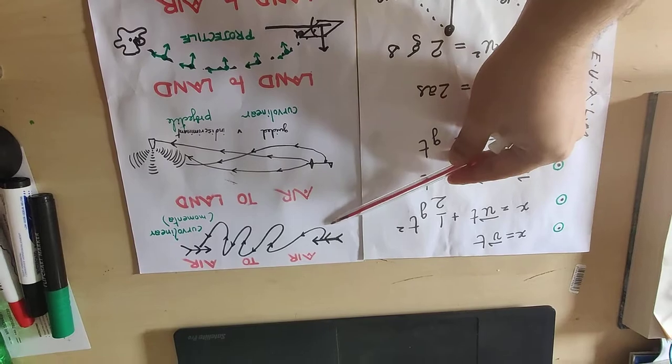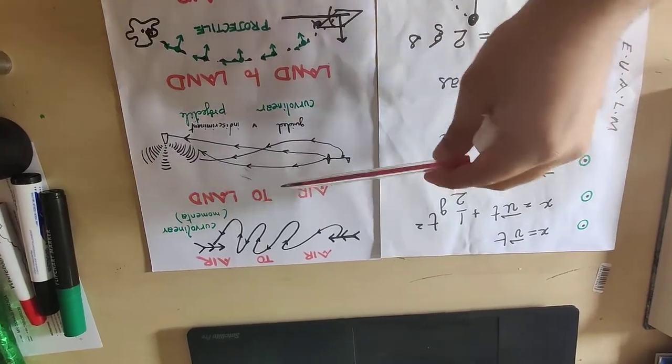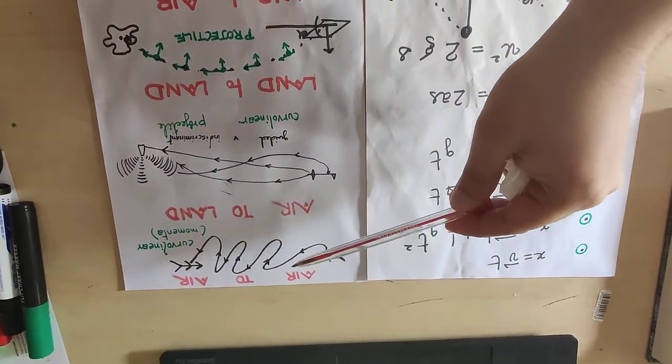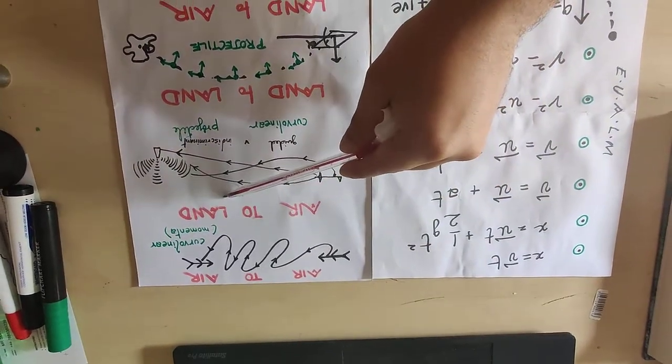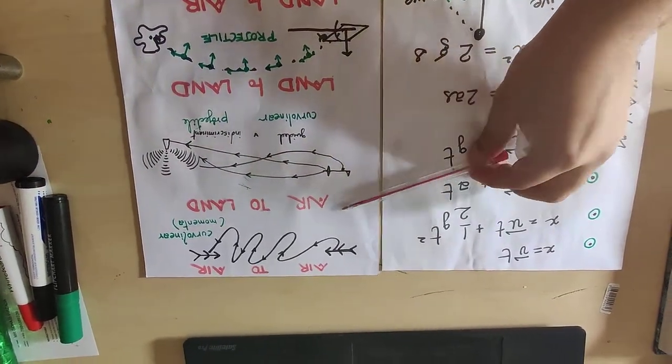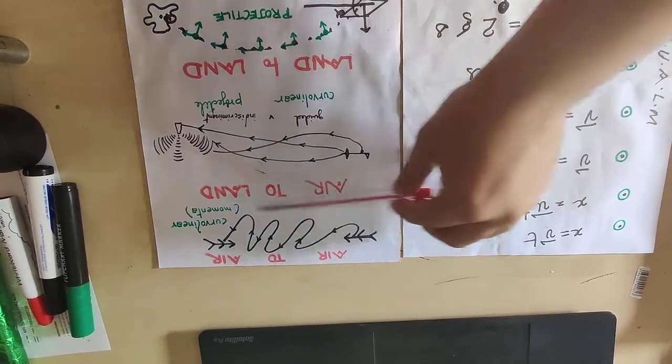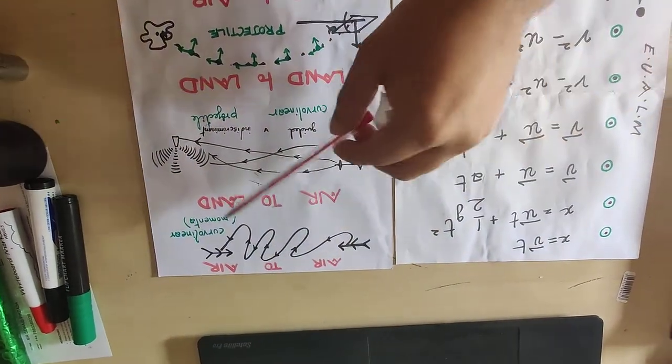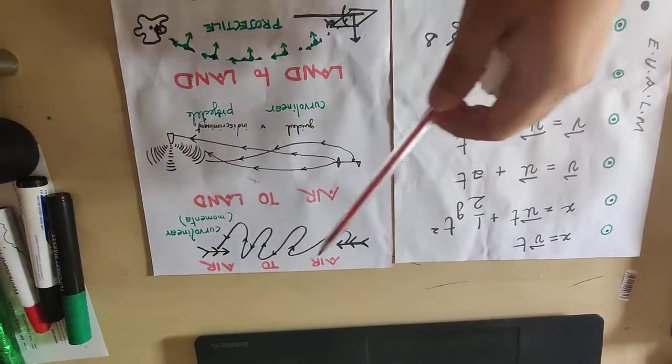When it's air to air, you will get, because of the kind of momentum involved, either curvilinear or sort of slightly straight, but it'll be curvilinear for the most part.